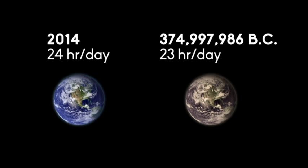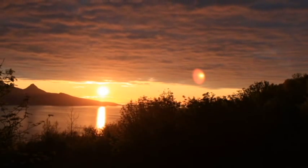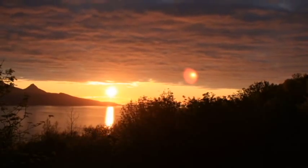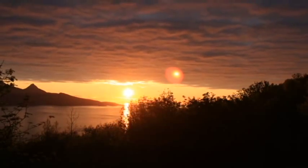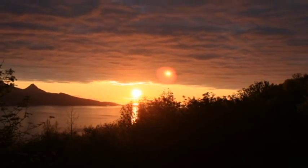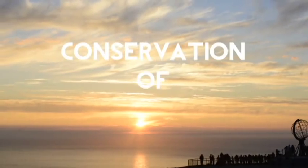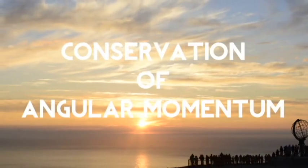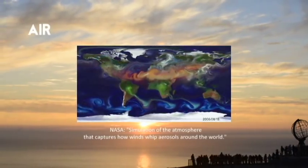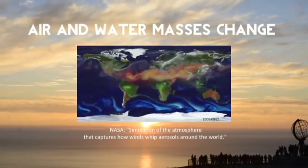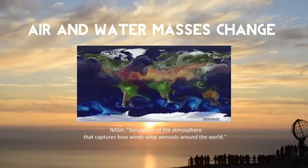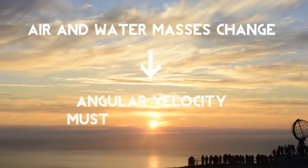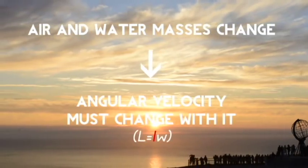375 million years ago, a day on Earth was only about 22 hours long. The length of a day changes daily, though so minutely and irregularly that you won't really notice it. This is due largely in part to the conservation of angular momentum. The constant change in air and water masses changes the distribution of matter around Earth's axis of rotation, and so the angular velocity must change with it.